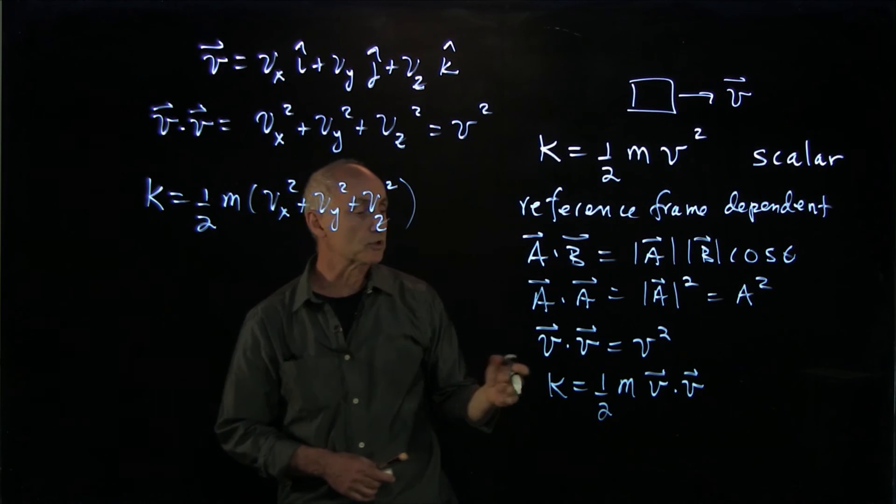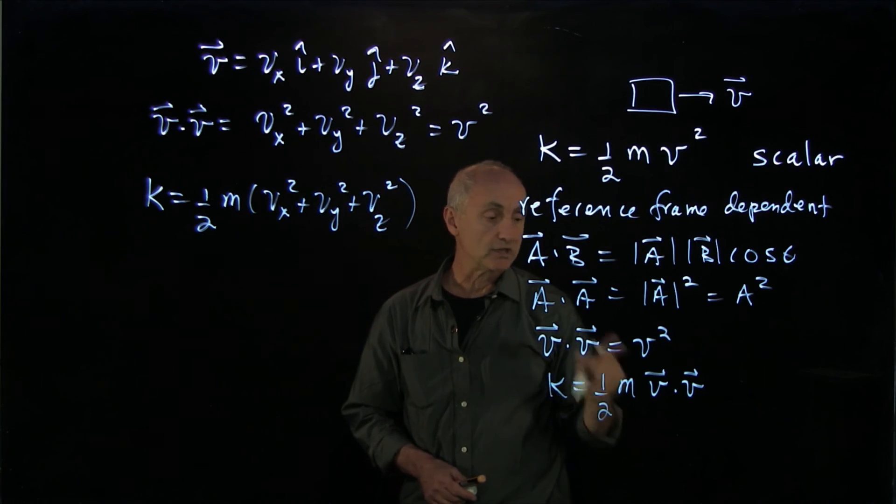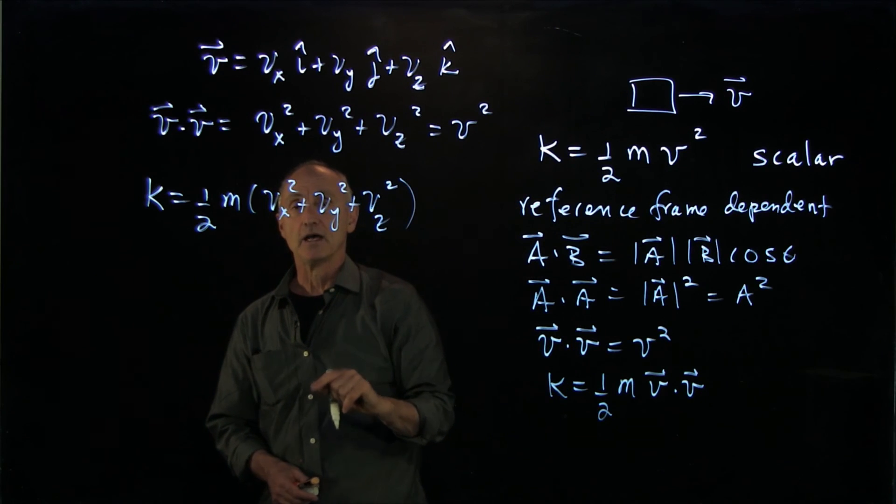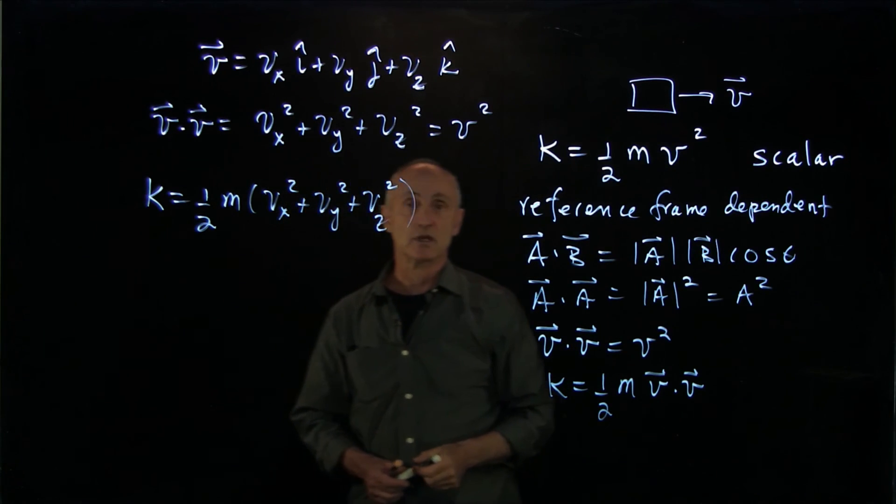So there's a simple way to express abstractly the kinetic energy as a dot product and explicitly in a coordinate system as the sum of the squares of the components of the velocity.